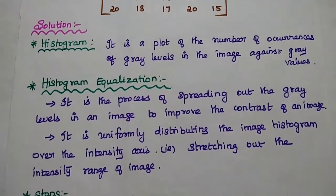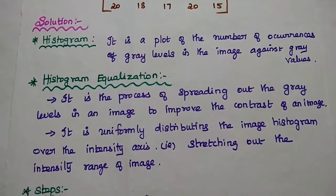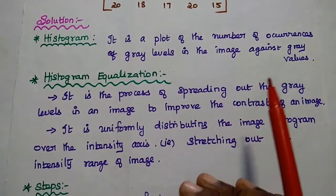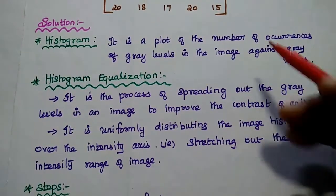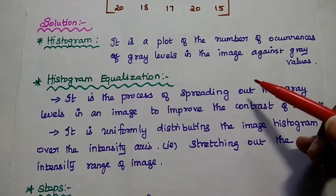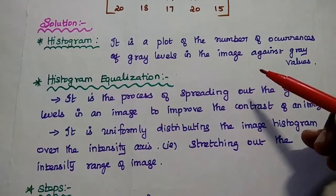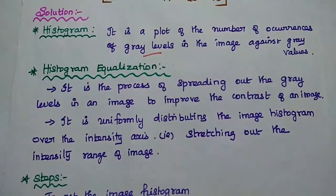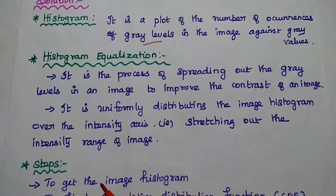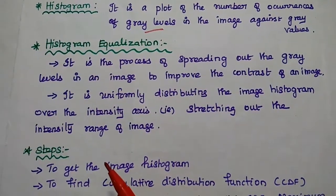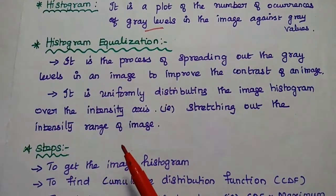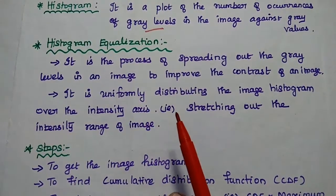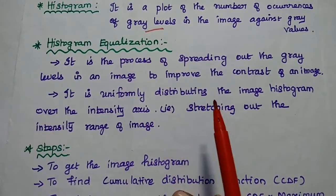So what does a histogram represent? A histogram is a plot of the number of occurrences of the gray levels in the image against gray values. Histogram equalization means we are going to spread out the gray levels in the image to improve the contrast of an image.